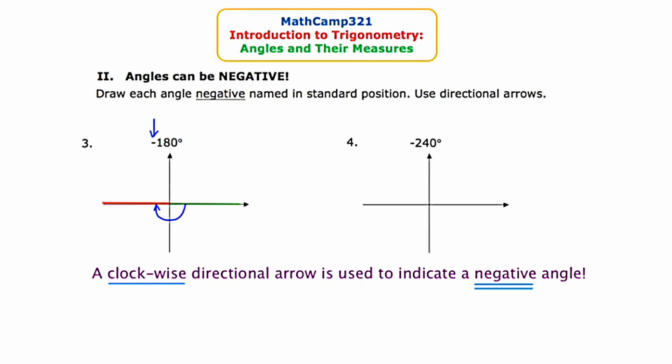Now let's draw negative 240 degrees. I'll start with the initial side. Negative 90, negative 180, negative 270 — negative 270 is too far, so I need to go 30 back from that, landing the terminal side approximately here. Then I'll use a clockwise directional arrow to indicate it's a negative angle. The key takeaway for this slide: negative angles use a clockwise directional arrow, always starting at the initial side and ending at the terminal side.